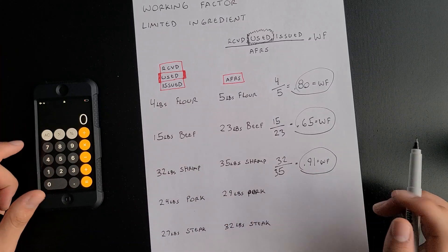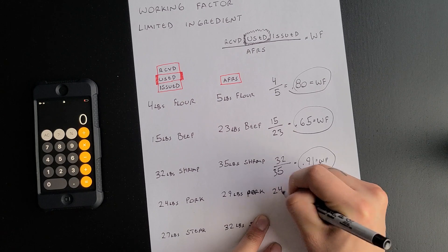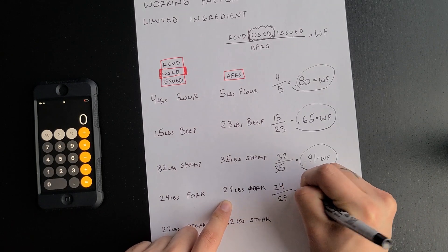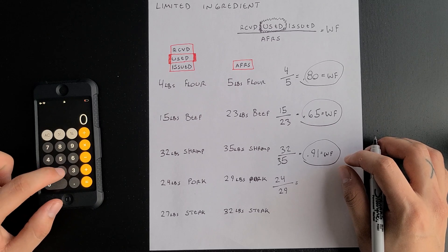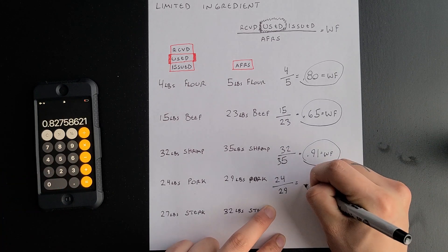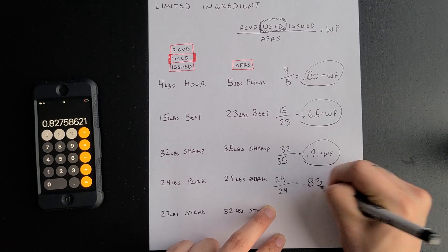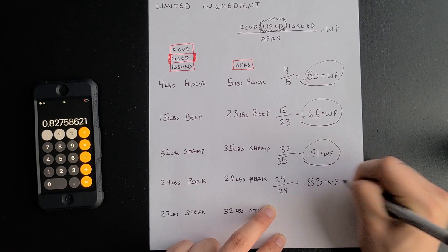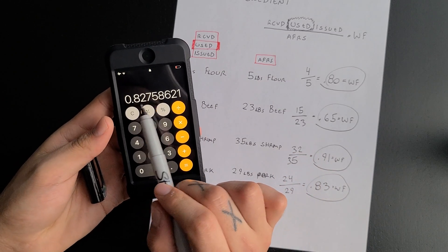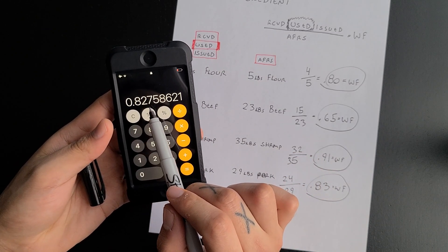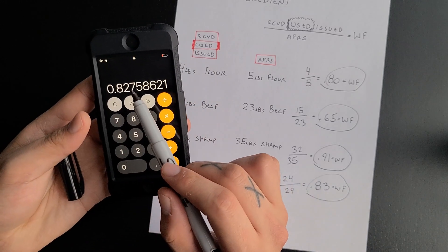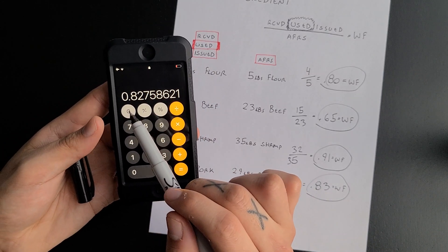Next one is pork. You have 24 pounds of pork that were used, divided by your 29 pounds, which is what your recipe calls for. So 24 divided by 29 equals 0.83. We round to the hundredths place — if the third decimal digit is five or above, we round up, which gives us 0.83. If it's four or below, this number would stay the same and it would be just 0.82.